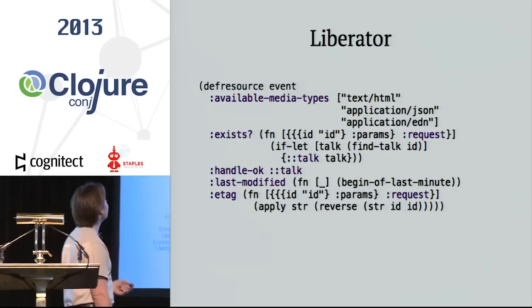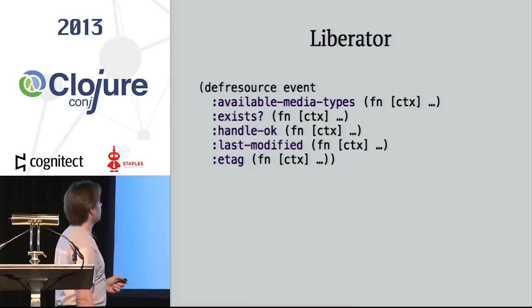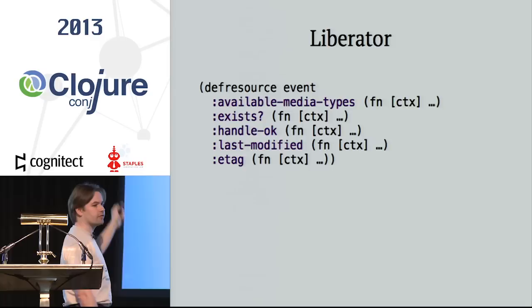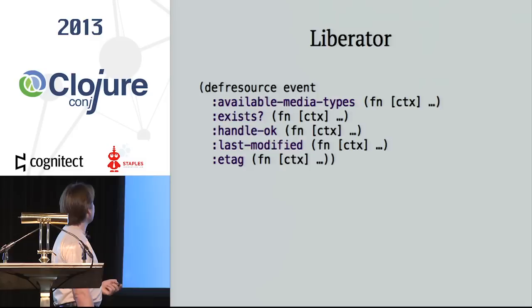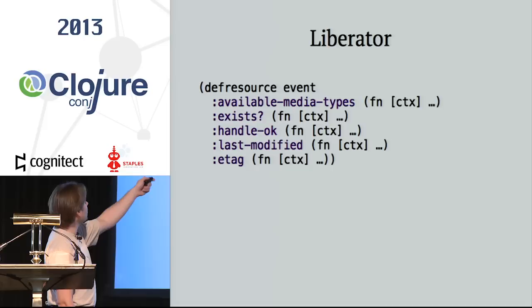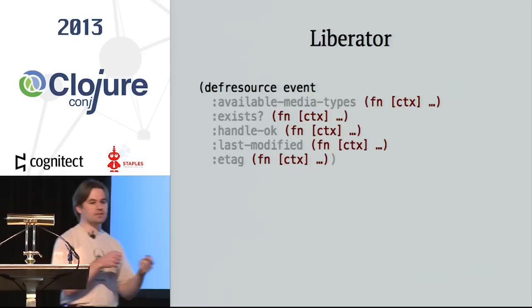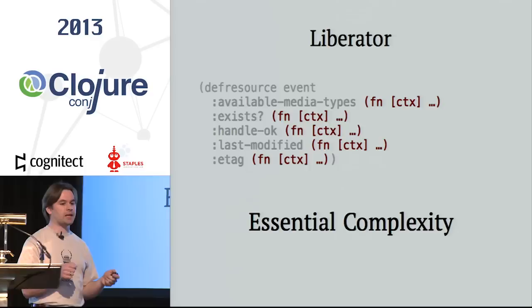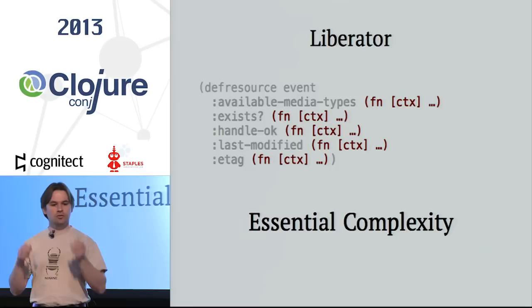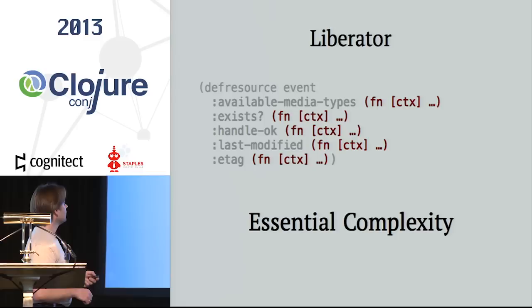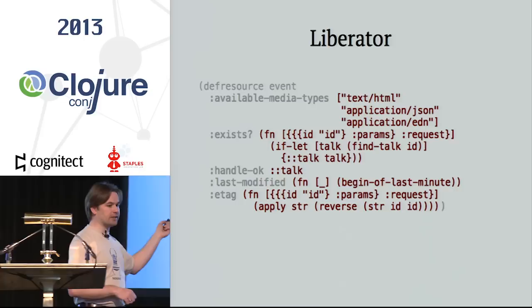Analyzing what we have: it boils down to a `defresource` declaration with a list of declarations for decision points and handlers. The values on the right side are functions that declare the essence of your resource representation — this is the essential complexity of the resource implementation. You cannot go without it, whether you use Perl, Erlang, Ruby, plain Ring, or Node.js. You have to implement this at some point.